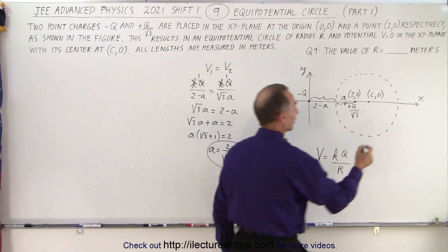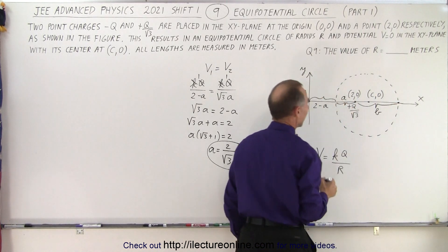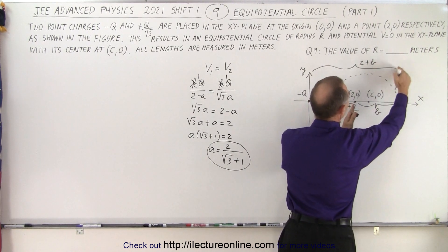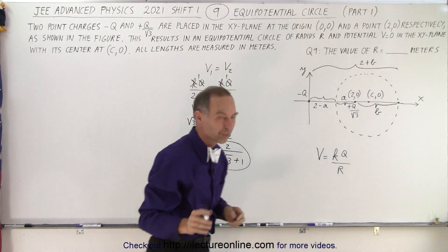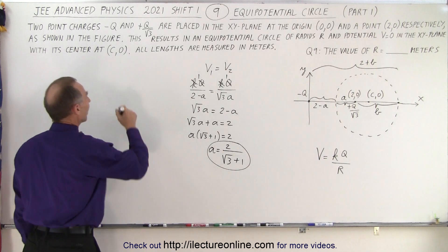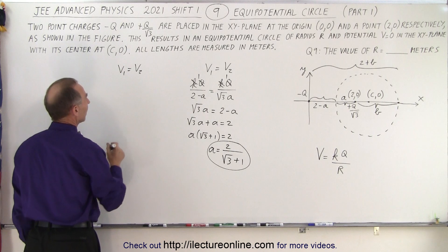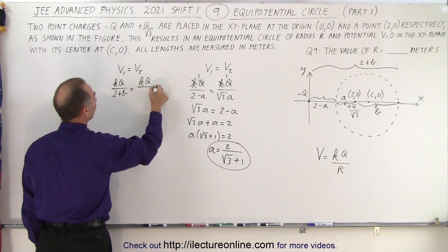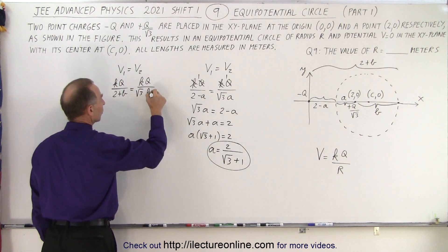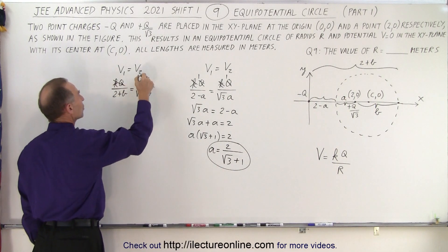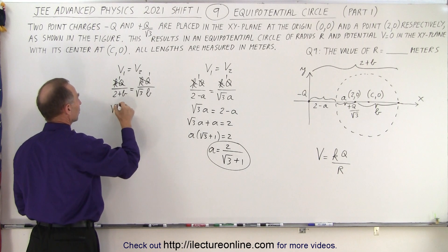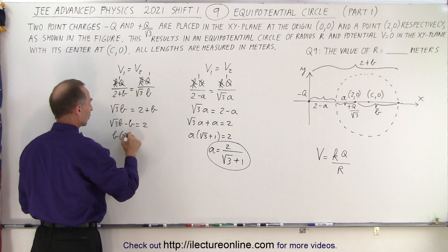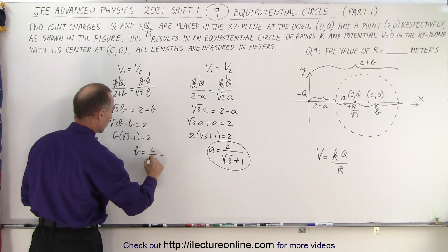We do the same thing on the other side, calling that distance B. The whole distance from the second charge to the far edge of the circle is 2 plus B. Setting V1 equals V2 for this second point: KQ divided by (2 plus B) equals KQ over the square root of 3 times B. KQ cancels; cross-multiplying gives square root of 3 times B equals 2 plus B, so square root of 3 times B minus B equals 2, giving B times (square root of 3 minus 1) equals 2, therefore B equals 2 divided by (square root of 3 minus 1).